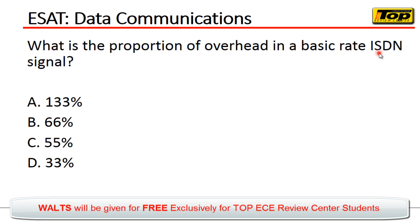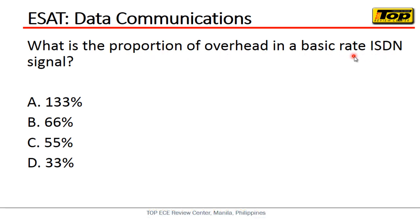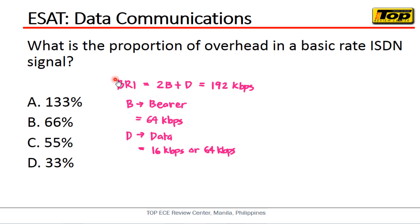ISDN stands for — just kidding — it's Integrated Services Digital Network. So the question is asking for the proportion of overhead in a BRI. If you're asking what is the formula for BRI, the formula for the basic rate interface is equal to 2B plus D, and it has a bit rate of 192 kbps.